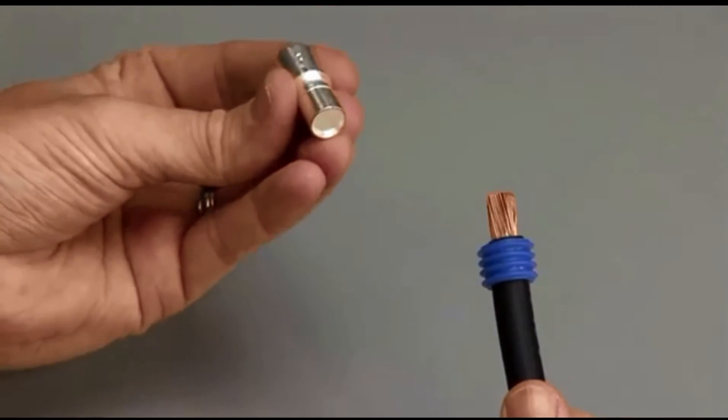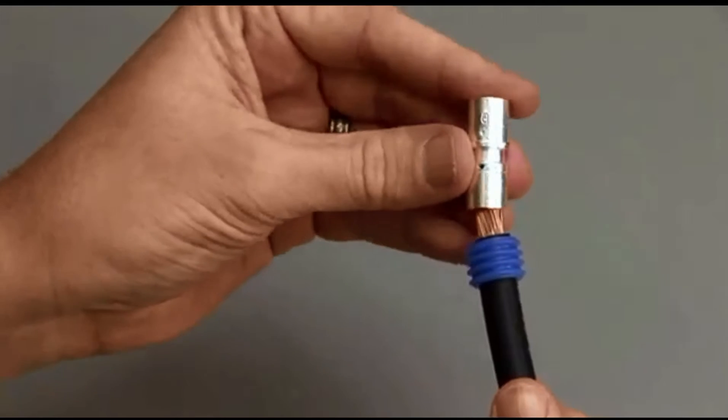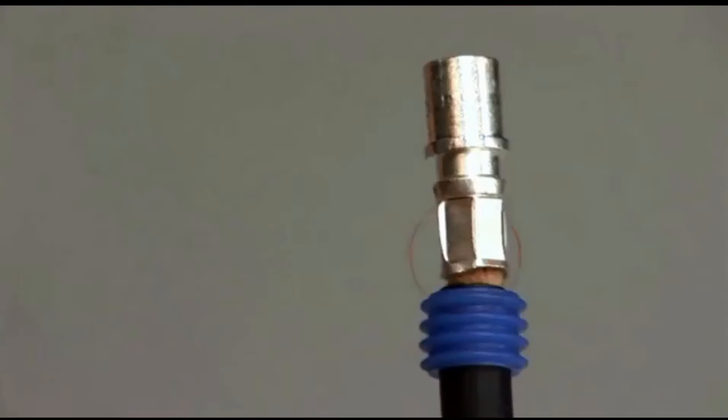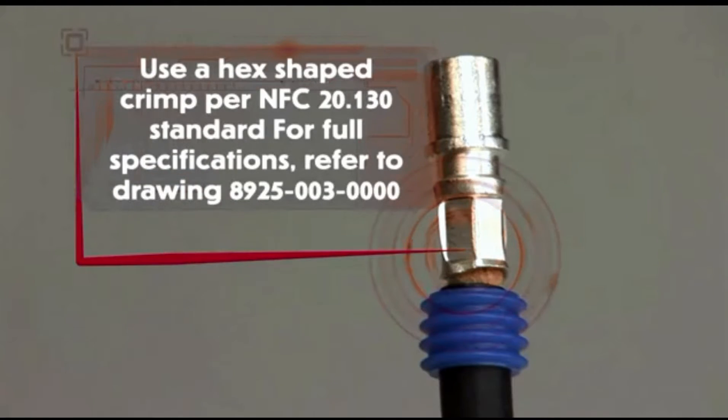To crimp 8mm contacts, use a hex-shaped crimp per NFC 20.130 standard. For full specifications, refer to drawing 8925-003-0000.